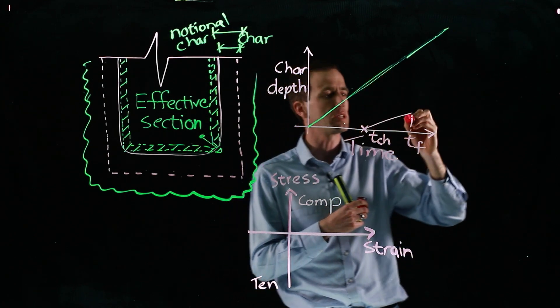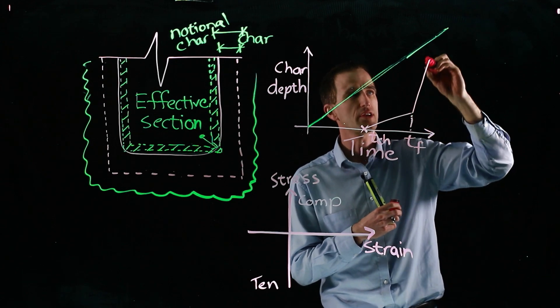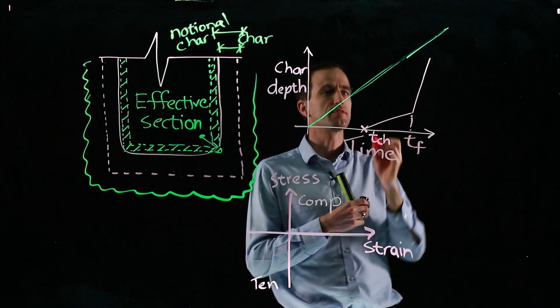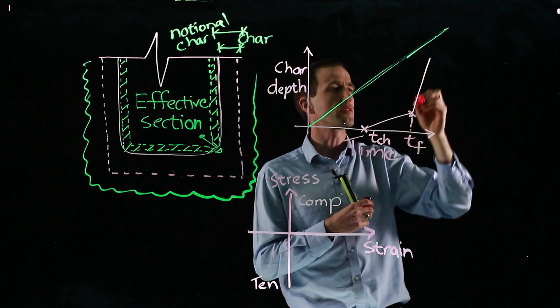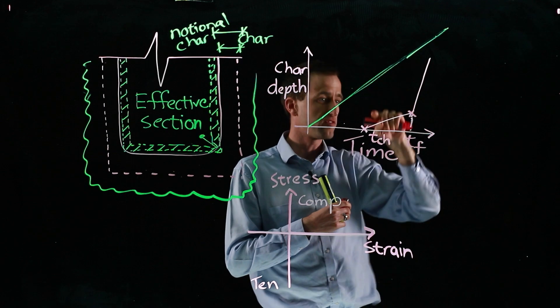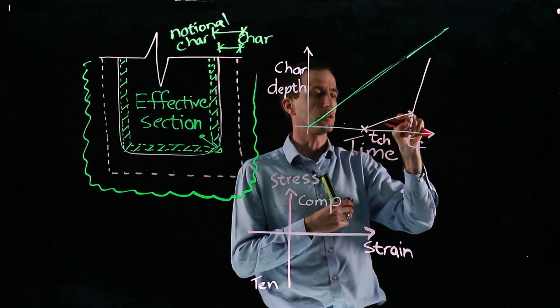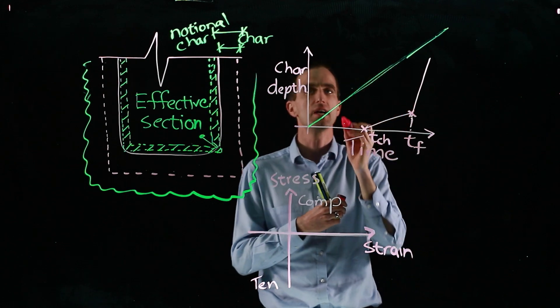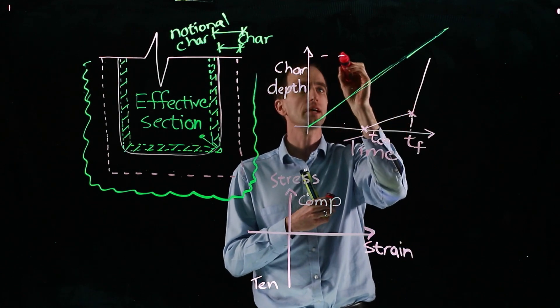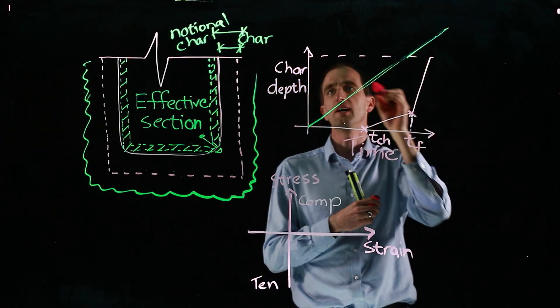Actually in excess of the normal charring rate. So from here, it'll then rapidly increase at about four times the rate of the original and about double this rate because of the preheating effect. And that occurs until we have a charring depth of about 25 millimeters.